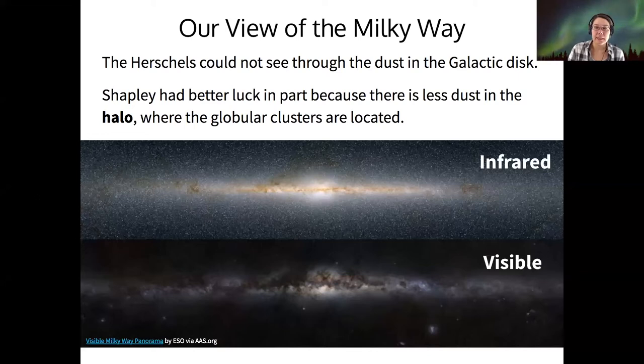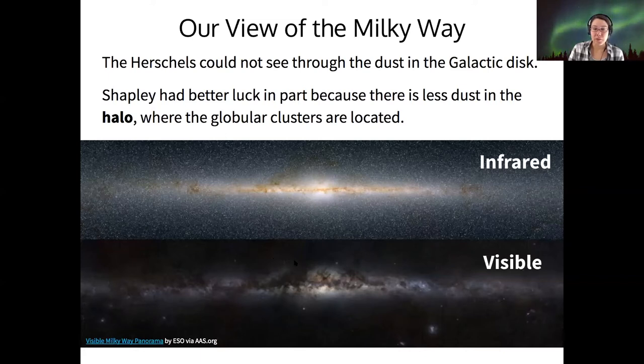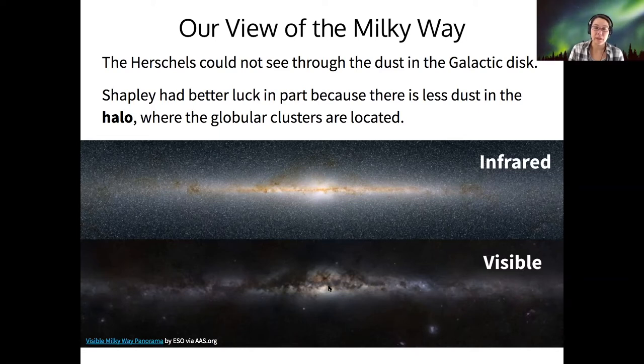And when we try to do this, it's important to use different wavelength ranges. So the visible wavelength range is not still particularly useful because we can't see through the dust in the galactic disk. Shapley had better luck in mapping out the extent of the Milky Way, just mostly because there's less dust out there in the halo. But we can use other wavelength ranges as a different way to get around this problem. Because if we want to know where all the gas is and all the stars are in the disk of the Milky Way, then we need to look into the disk. We have no choice.